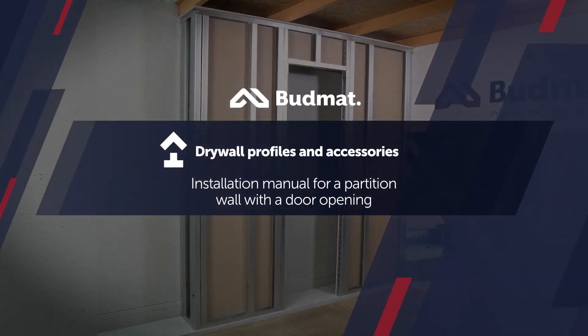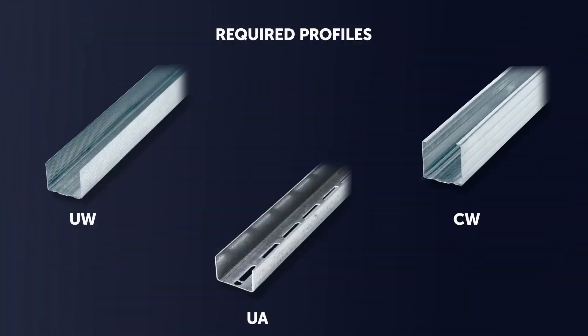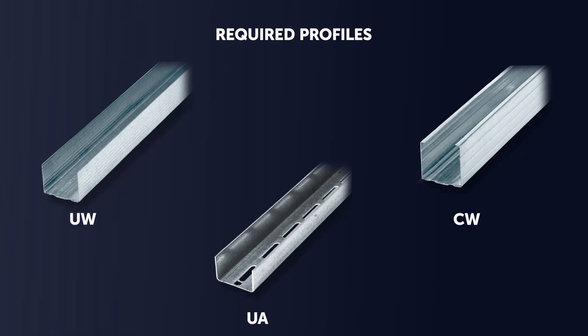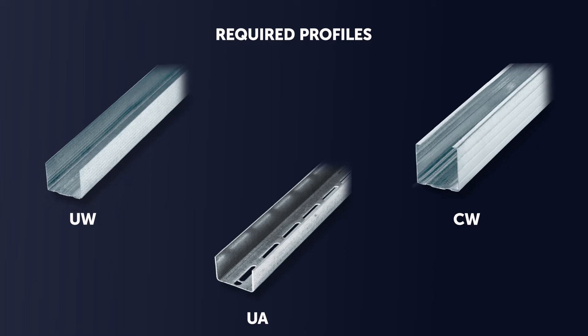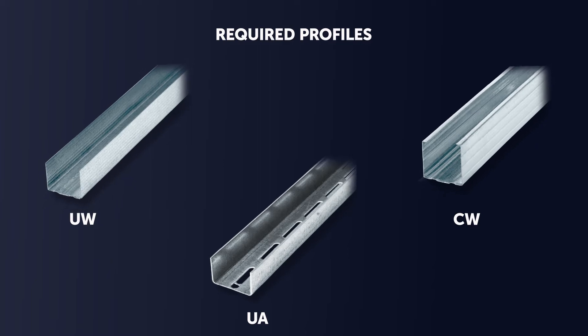Installation manual for a partition wall with a door opening. UW and CW profiles and UA door frame profiles in appropriate lengths will be used to build the wall.